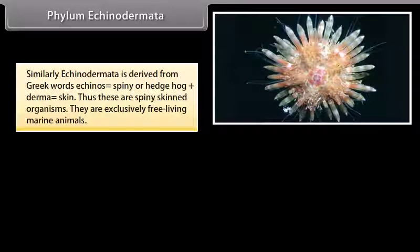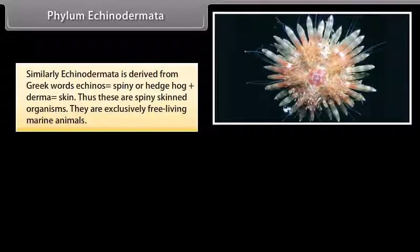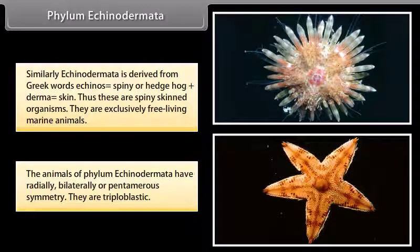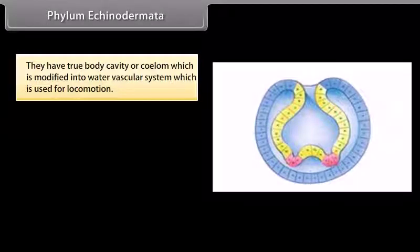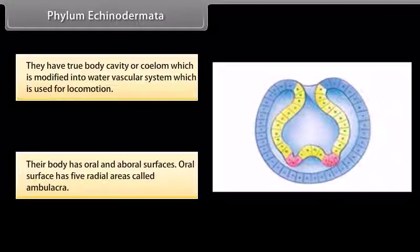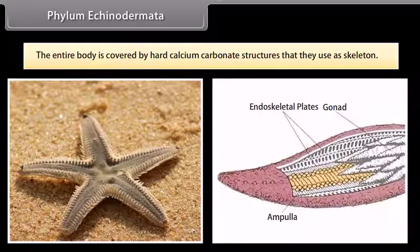Phylum Echinodermata. Echinodermata is derived from Greek words: echinos, spiny or hedgehog, plus derma, skin. Thus these are spiny-skinned organisms. They are exclusively free-living marine animals. The animals of phylum Echinodermata have radially, bilaterally, or pentamerous symmetry. They are triploblastic. They have a true body cavity or coelom, which is modified into a water vascular system used for locomotion. Their body has oral and aboral surfaces; the oral surface has five radial areas called ambulacra. The entire body is covered by hard calcium carbonate structures used as skeleton.